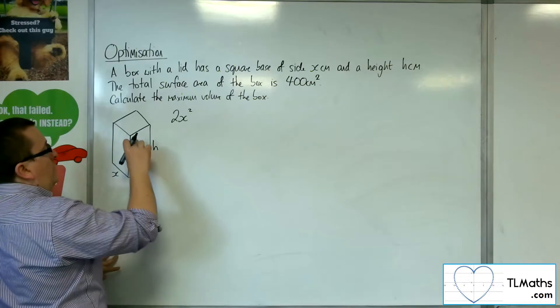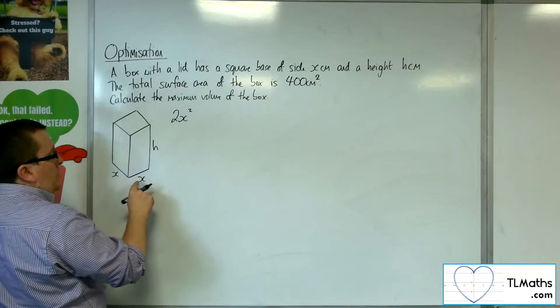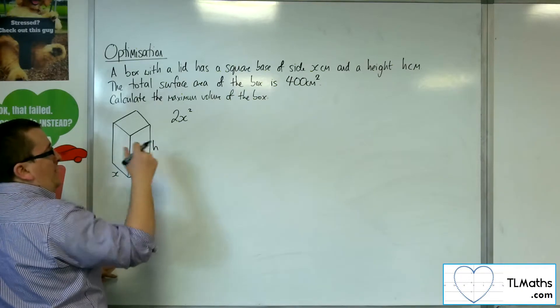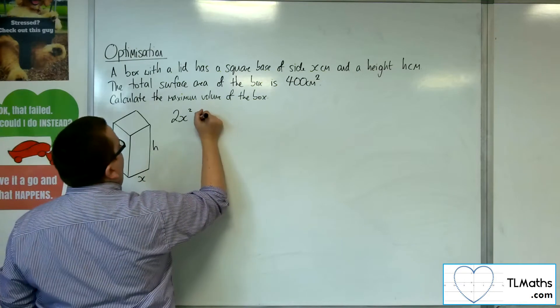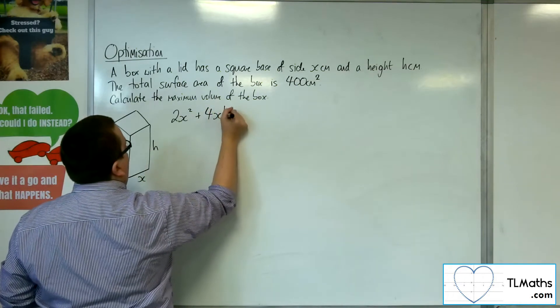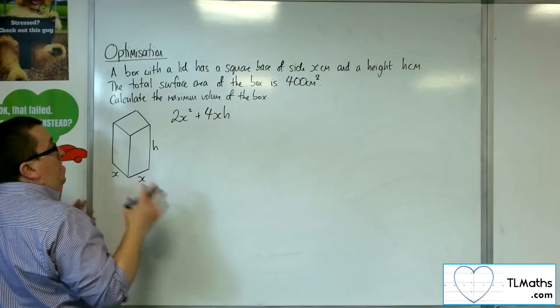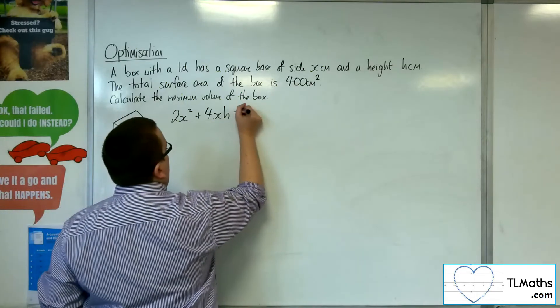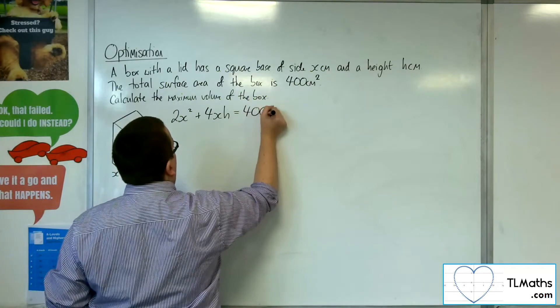Then we've got the sides. Each of those are given by x times h and there's four of those, so we've got 4xh. And we know that equals 400.